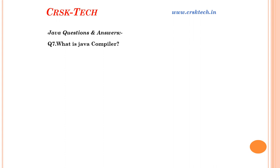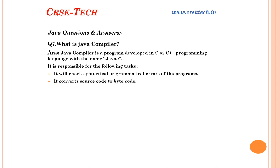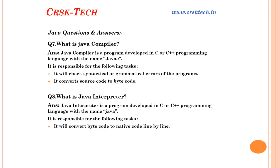Question number seven: What is Java compiler? Java compiler is a program developed in C or C++ programming language with the name javac. Java compiler is responsible for checking syntactical and grammatical errors in the Java program. If there are no errors, then Java compiler converts the source code into bytecode. Question number eight: What is Java interpreter? Java interpreter is a program developed in C or C++ with the name java. Java interpreter is responsible for converting bytecode into machine code line by line, then executing the machine code on the machine.